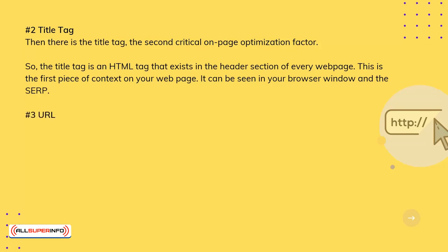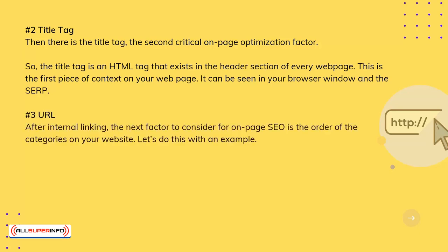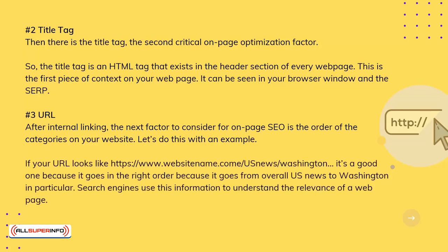Number 3: URL. The next factor to consider for on-page SEO is the order of the categories on your website. For example, if your URL looks like https://www.websitename.com/US-News/Washington, it's a good one, because it goes in the right order — from overall US News to Washington in particular. Search engines use this information to understand the relevance of a webpage.